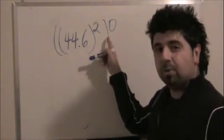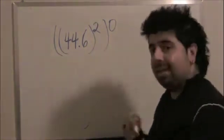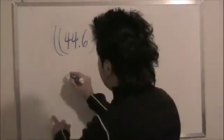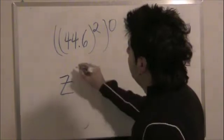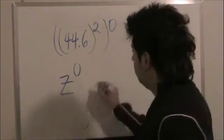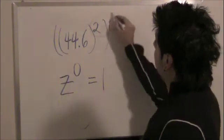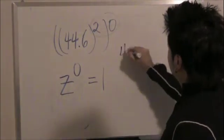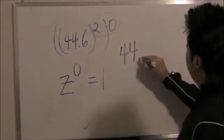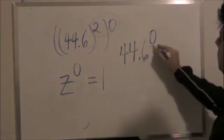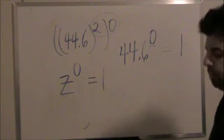But because your next power is to the power of 0, anything to the power of 0 is 1. So even if you had a letter, Z to the power of 0 is equal to 1. So because 2 times 0 is going to give me 0, my next step would be 44.6 to the power of 0. Anything to the power of 0 is equal to 1.